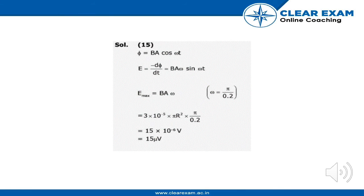Now E max is equal to BA omega, where omega is pi upon 0.2. So we have 15 microvolts.